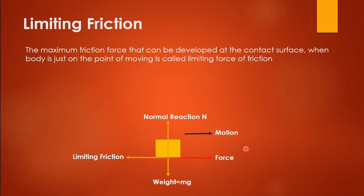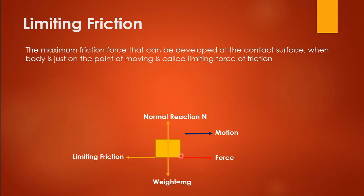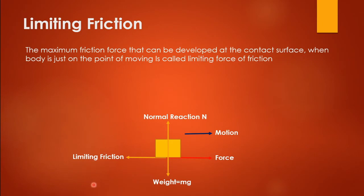In this diagram, we have the weight mg of the body, and a corresponding normal reaction, because from Newton's third law every action has an equal and opposite reaction. When we apply force, the body remains at rest. The friction acts in the direction opposite to the applied force. Up to the limiting point the body remains at rest; after crossing the limiting friction, the body starts to move.